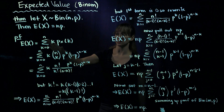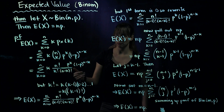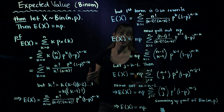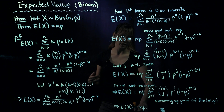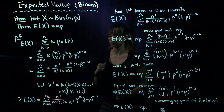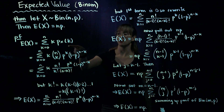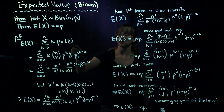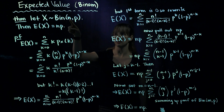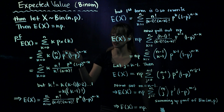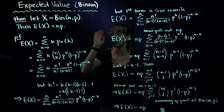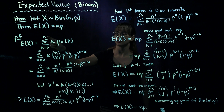For the proof of this we're going to start off with just the definition of expected value and then use some rewriting of this sum in order to end up with the expected value of x equaling np. Starting from the definition of expected value, we have the sum of k times the PMF evaluated at k, for k equals 0 to n. We have n trials, so we could have zero successes, one success, all the way up to n successes — that's why this sum goes from 0 to n.